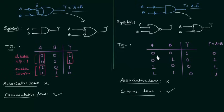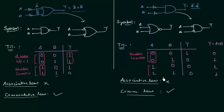Now for the NOR gate: analyzing the first two cases where A is equal to 0 — output Y is 1 when B is 0 and Y is 0 when B is 1. The output is not fixed, so 0 is acting as enable and acts as an inverter because the output is the complement of B. For the last two cases where A is 1, output is fixed at 0, so 1 is acting as disable for the NOR gate with output equal to 0.